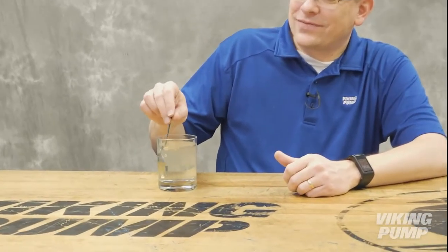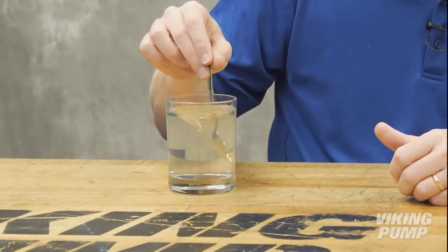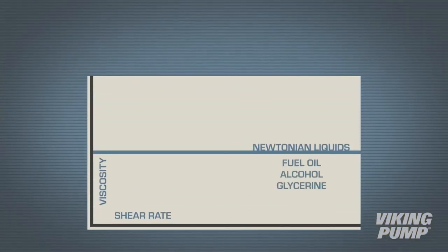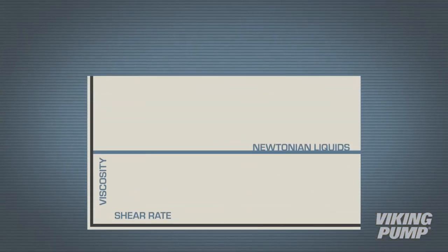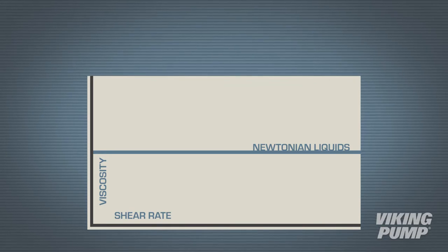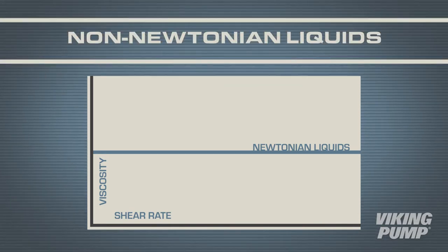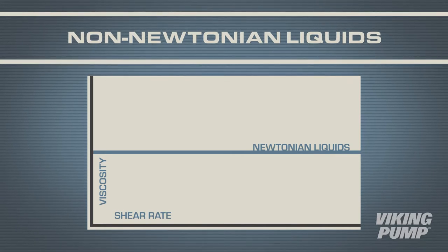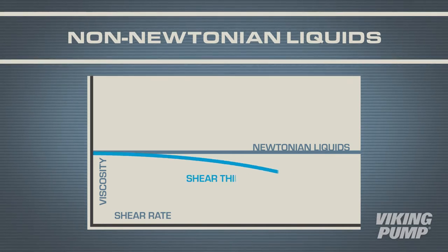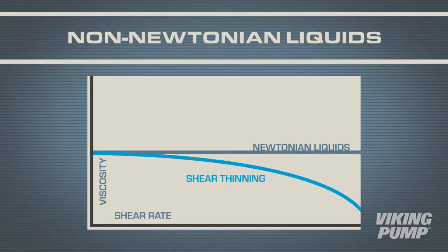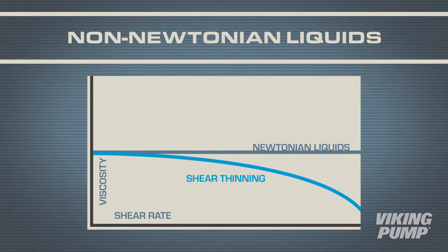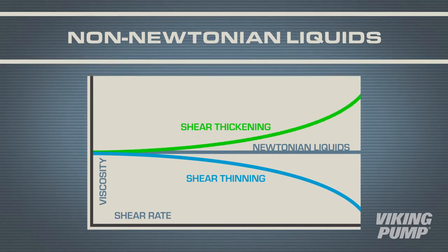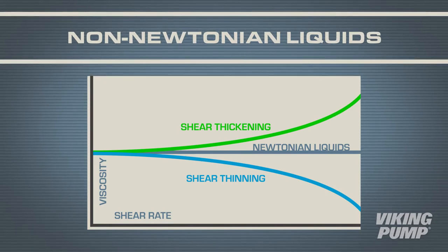Water retains its viscosity independent of the rate of shear. Other examples include fuel oil, alcohol, and glycerin. The majority of Viking pump applications fall into a second category of non-Newtonian liquids. While there are a variety of each, let's keep this fairly simple. Some liquids decrease in viscosity as shear is applied — these are shear thinning liquids. Another class of non-Newtonian liquids increases in viscosity as shear is applied — these are shear thickening liquids.